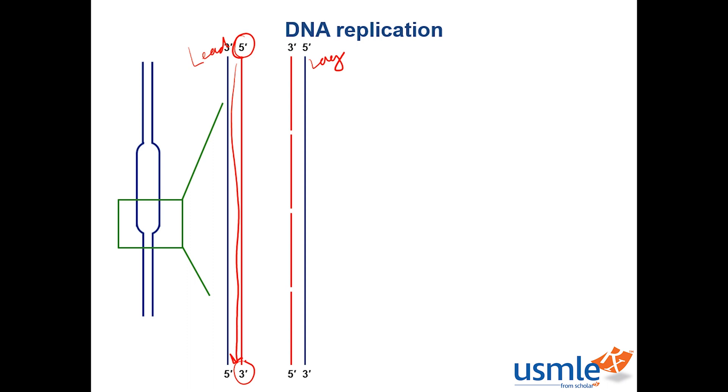However, the lagging strand has to be synthesized in the opposite direction that the replication fork is moving, so as the replication fork progresses, it has to keep starting over. Do you know what each piece of DNA on the lagging strand is called? That would be an Okazaki fragment.